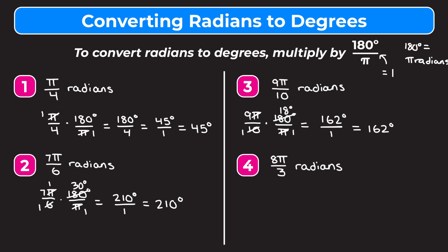I encourage you to pause the video and try the last problem on your own to make sure you understand, then watch me work through it. Our last one is eight pi over three radians. We're going to multiply by 180 degrees over pi, cross-reduce the pi's, then cross-reduce three and 180 by dividing both by three: three divided by three is one, 180 divided by three is 60. Eight times 60 gives us 480 on top, one times one on the bottom. So eight pi over three radians is equal to 480 degrees.